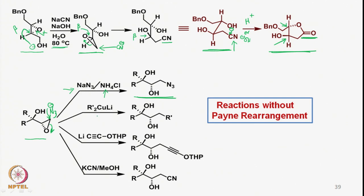We also have lithium cuprates of this type, which are not basic or ionic enough to allow deprotonation and intramolecular epoxide opening, and therefore such a reagent leads to attack at the terminal end. This is how the R-prime group comes onto the terminal end. We can also take lithium acetylide of this type where the epoxide carbon gets attached with the terminal acetylene part.